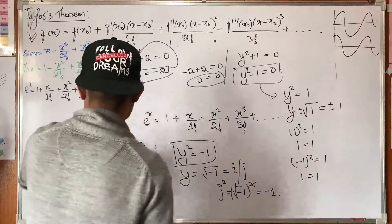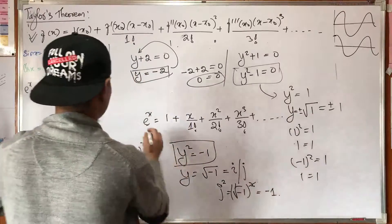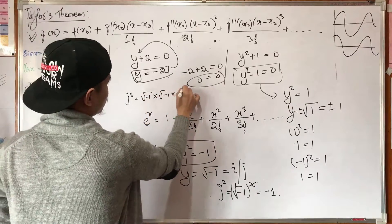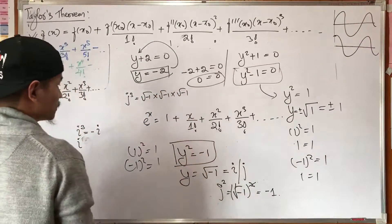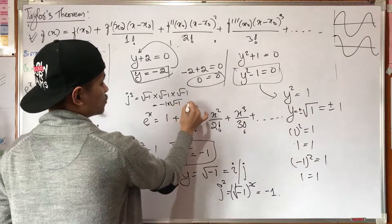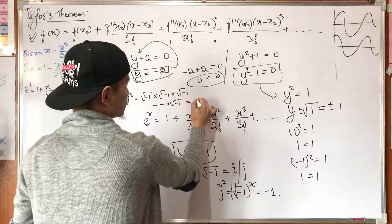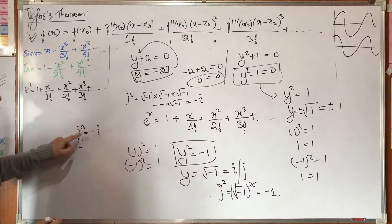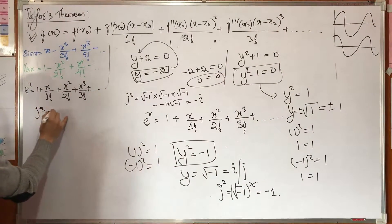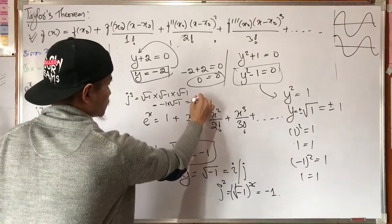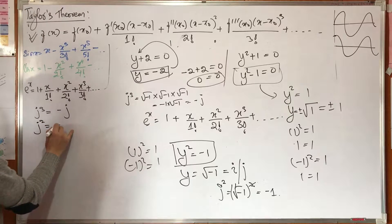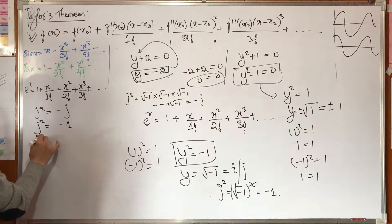j cubed: collect j cubed. Using root minus-1 multiplied together, j squared equals minus 1, j cubed equals minus j, and j to the power of 4 — let's multiply and replace. j to the power of 4, j squared is minus 1, so j to the power 4 equals 1.